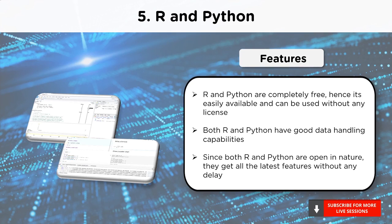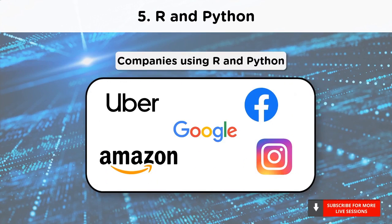As both R and Python are open in nature, all the latest features are available without any delay. Moving on to the companies using R: we have Uber, Google and Facebook, to name a few. Python is used by many companies — to name a few, we have Amazon, Google and Instagram.